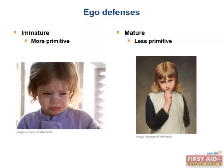There are two basic types of defenses. Immature defenses, which are thought to be more primitive and instinctive, and mature defenses, which are thought to be less primitive and more conscious. We'll go through each of these with a focus on examples. Let's start with the immature defenses.